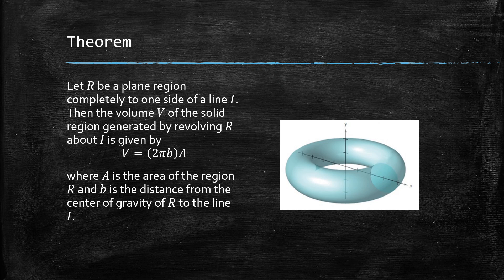And b is the distance from the center of gravity of R to the line I. Now it's also thought of as saying that the volume is equal to the area of R multiplied by the distance d traveled by the centroid of R. And that distance traveled would be that 2 times pi times b.